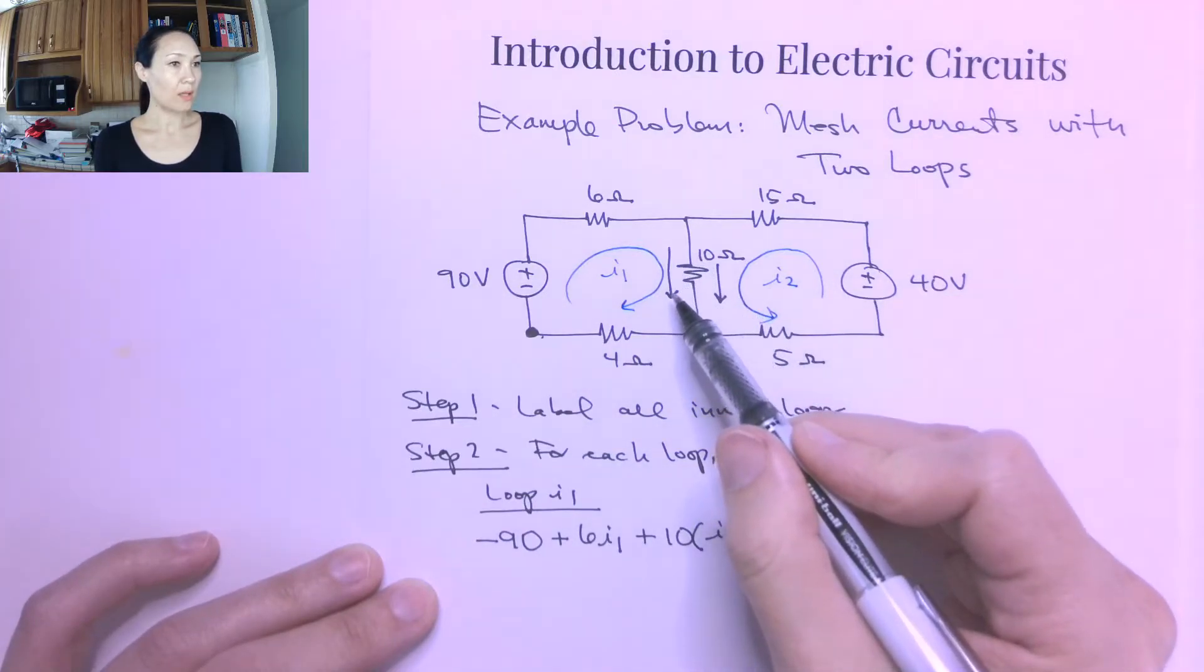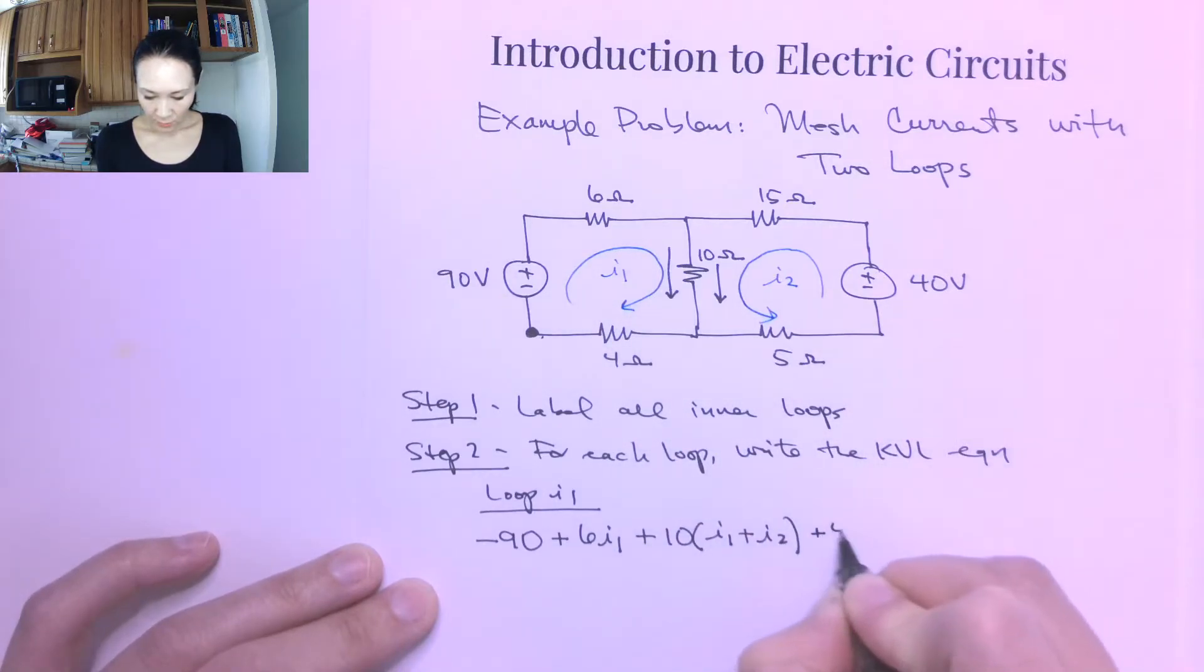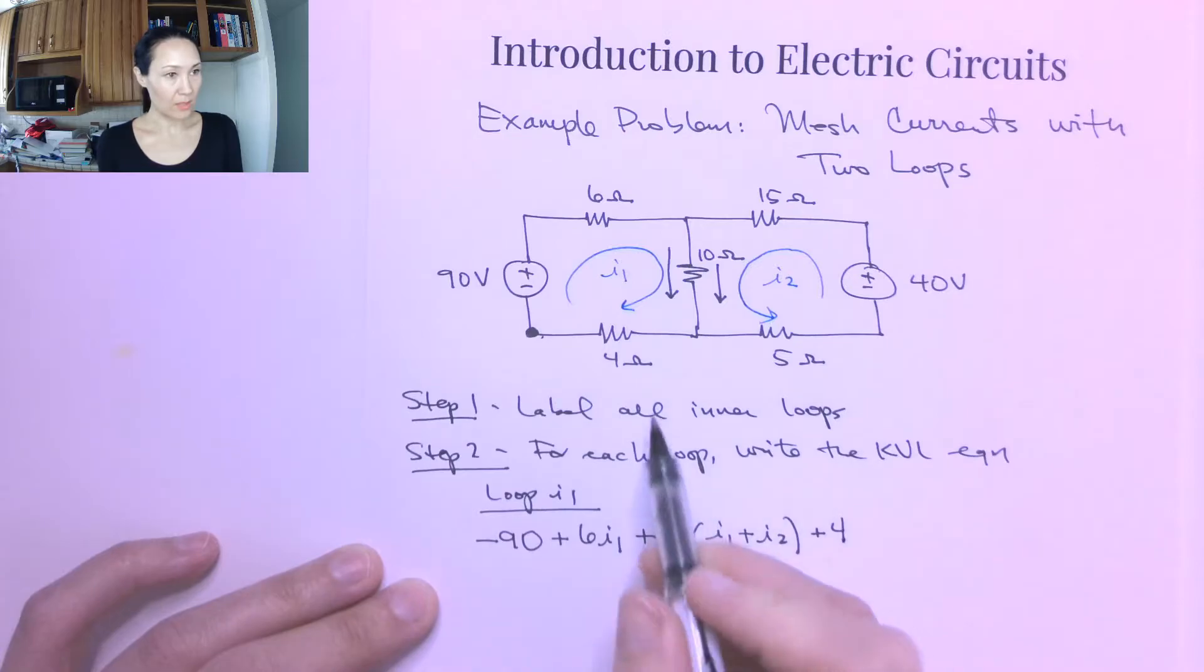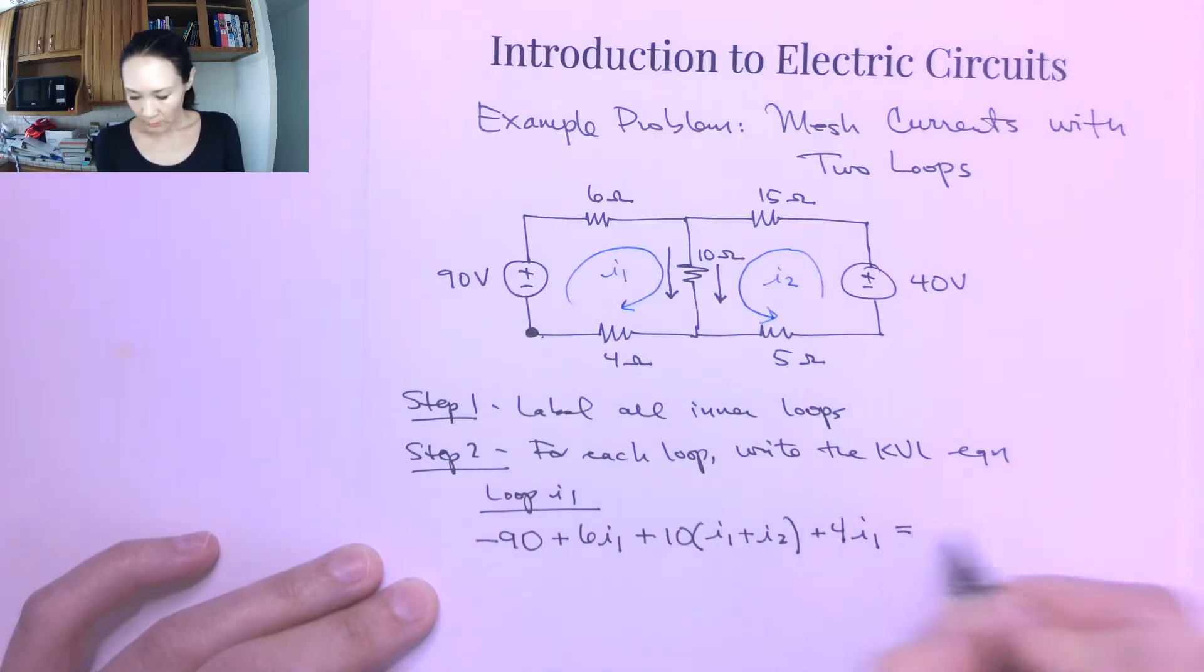Great, so I continue on in the direction of my I1 loop. The next thing I encounter is the 4 ohm resistor. It's only touching I1, so this will just be 4 times I1. And now I'm back to where I started, so I can finish my KVL equation with an equals 0.